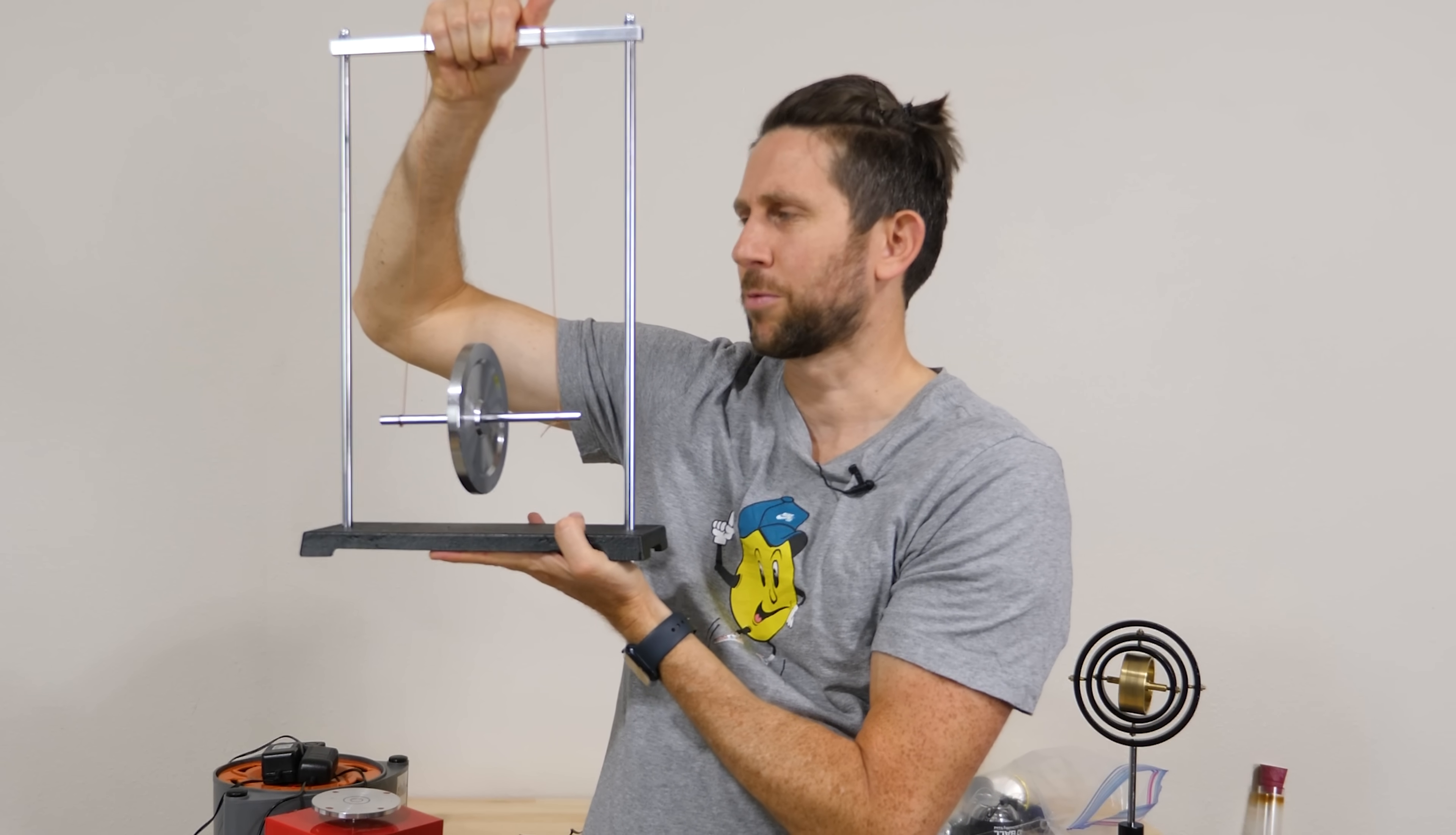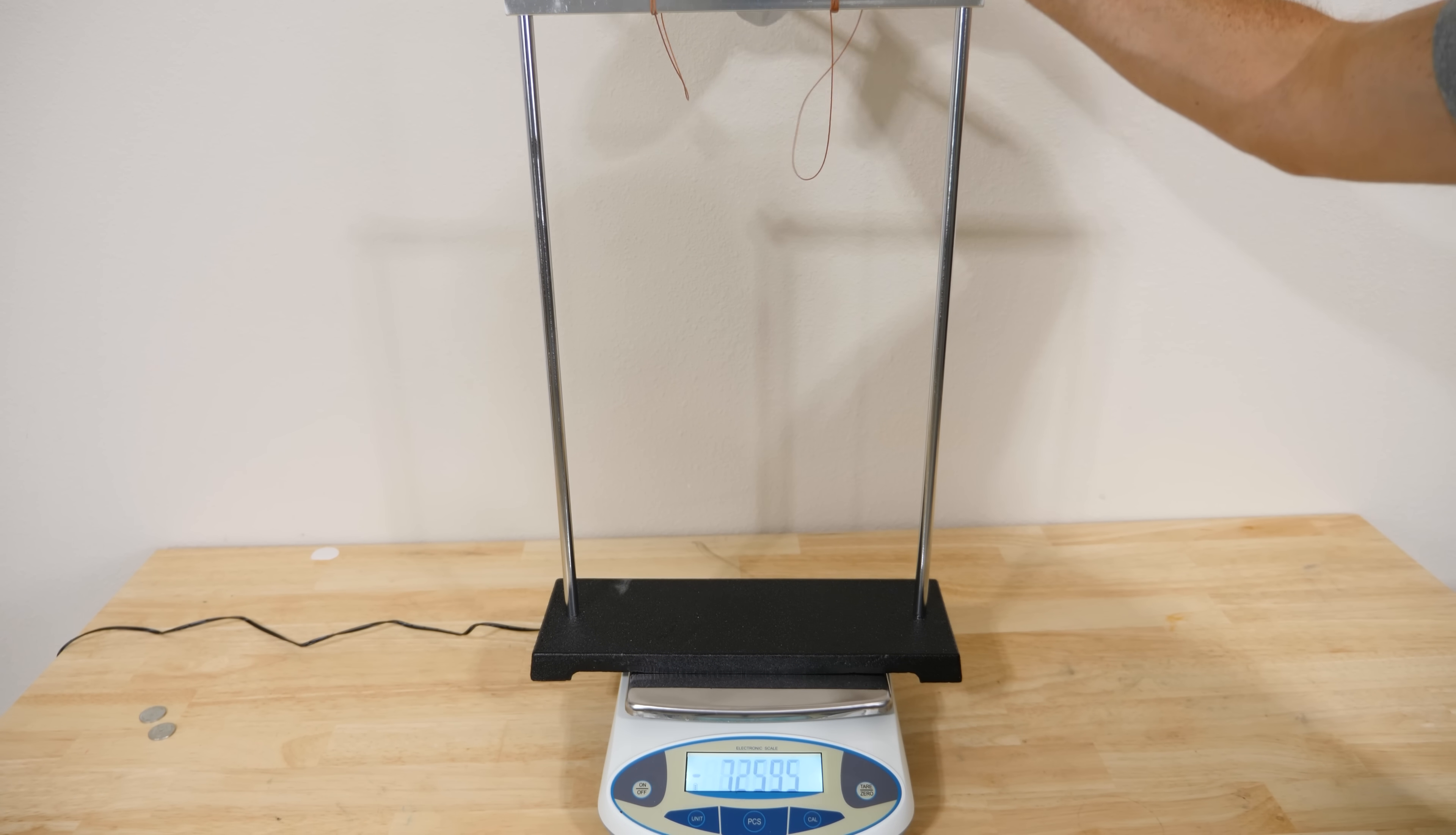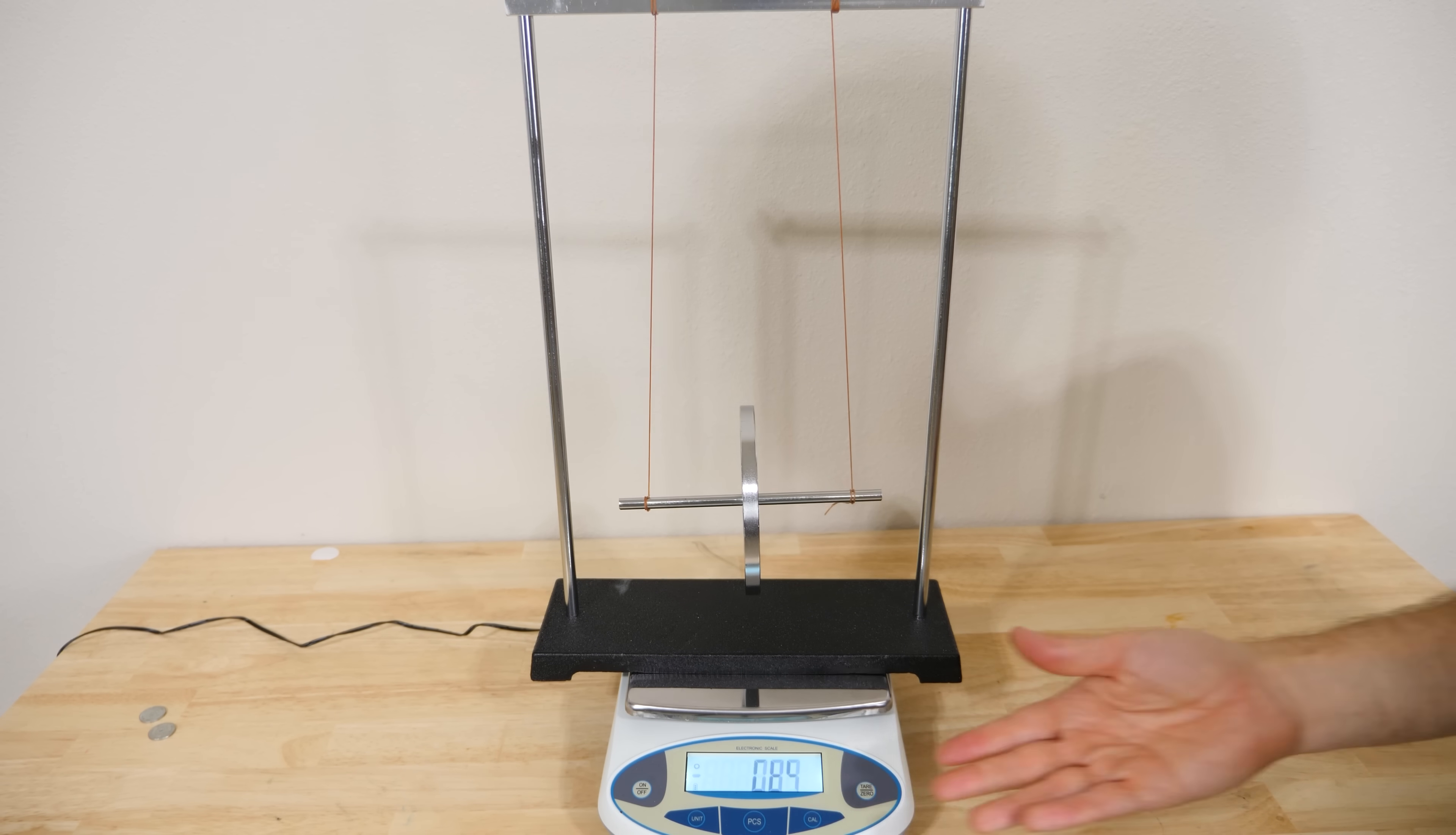So we can apply this to Maxwell's wheel like this. Let's say that I were to cut both of these strings here. We know that the second that I cut these strings it's going to weigh less by the weight of this disc. Because this is accelerating downward now, the weight decreased by the entire weight of the disc. But then when it hits the bottom it's going to weigh the same as it did before.